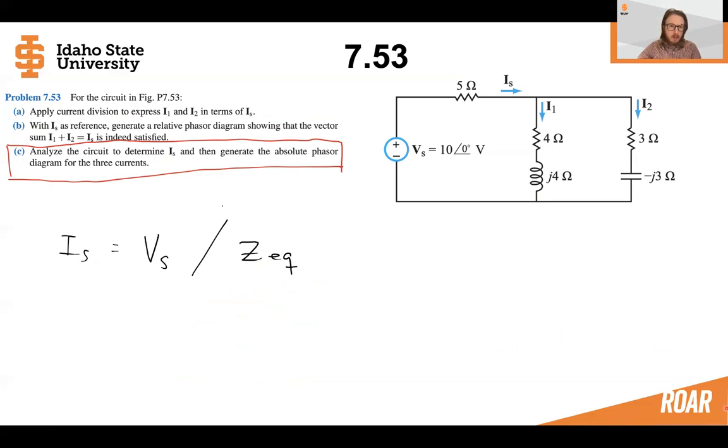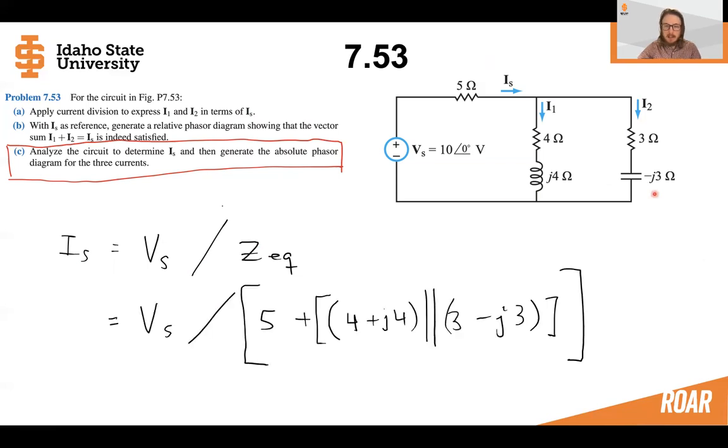We know that we could solve for this using this equation. This is basically Ohm's law. We can solve for this using Ohm's law, but we're going to need to find the equivalent resistance of this whole part of the circuit. That's probably the trickiest part of this.